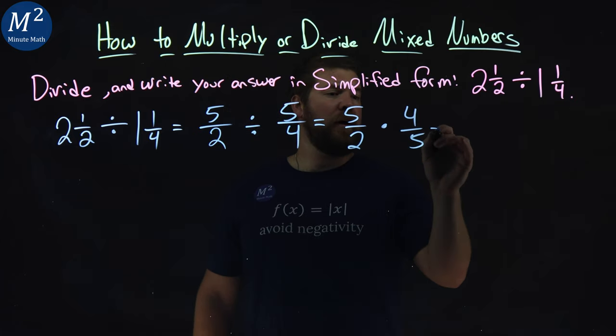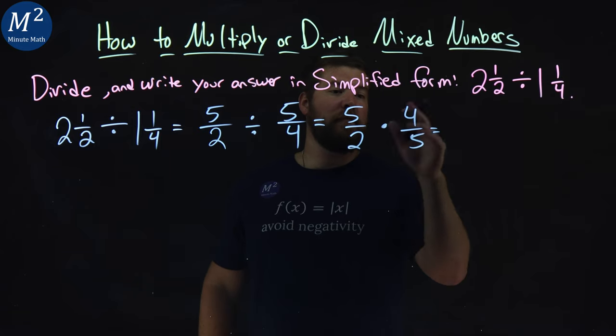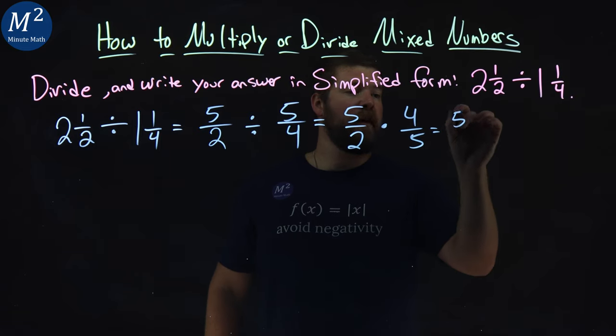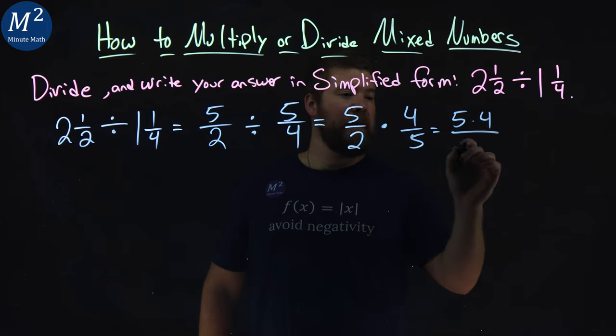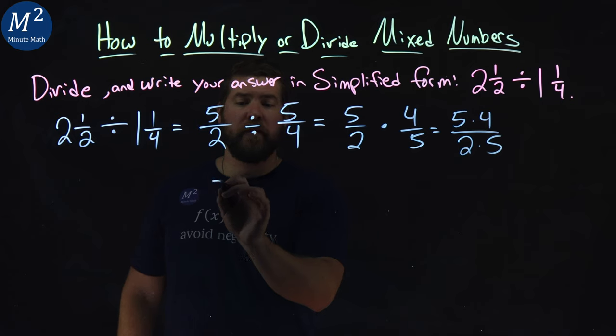Now to multiply this out, notice I'm not going to simplify this, right? I'm not going to say five times four is 20. I'm just going to rewrite this as five times four over two times five in the denominator. You'll see why in a minute.